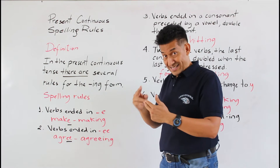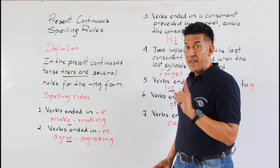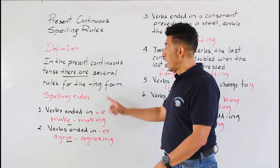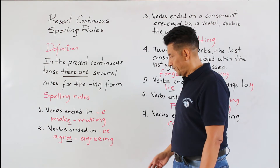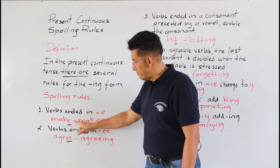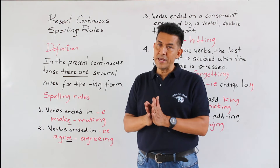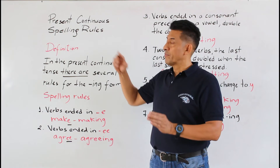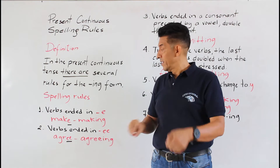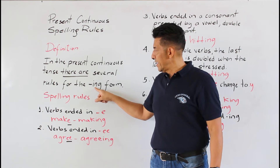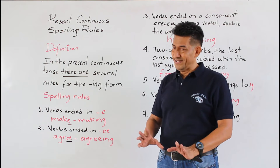We replace the letter E for ING. So the example is 'make' — todos los verbos que terminan en E, cuando yo utilizo el presente continuo debo omitir la E y agregar ING. Esta es la regla más fácil.